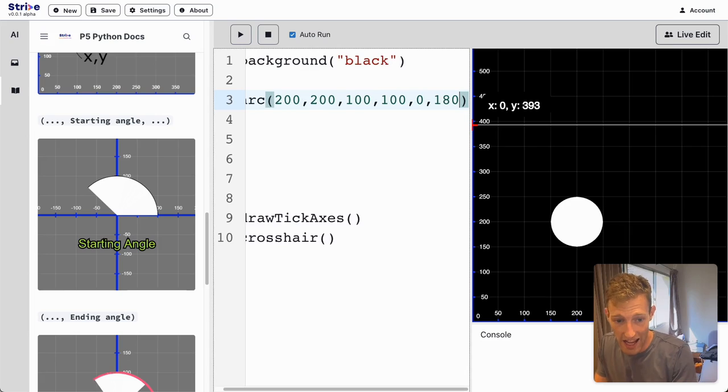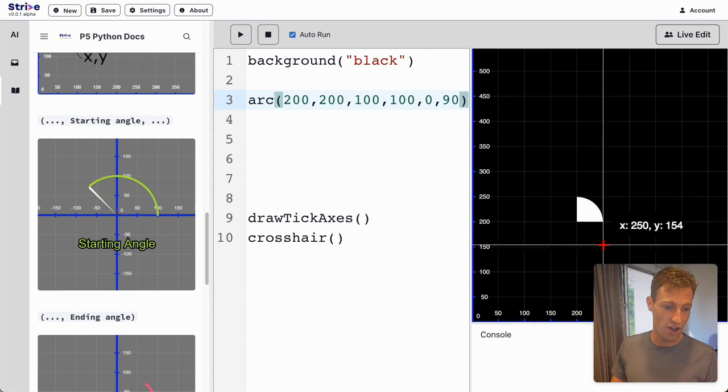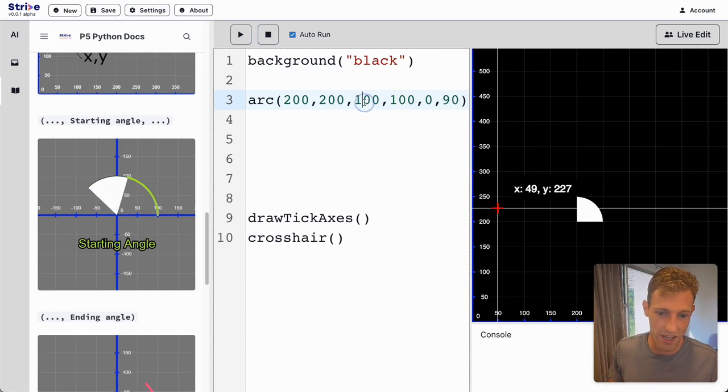If I did 180 over here, I'm going to get half a circle. If I get 90, I'm going to get a quarter of a circle. We should make this way bigger. This is small. Let's go 400, 400.